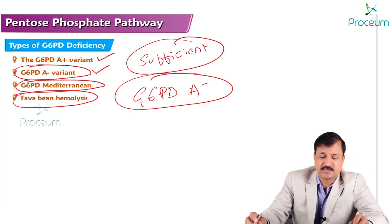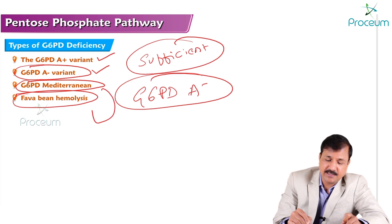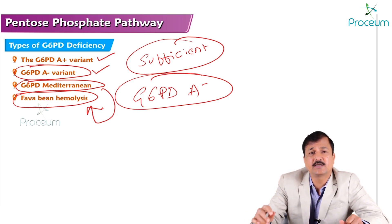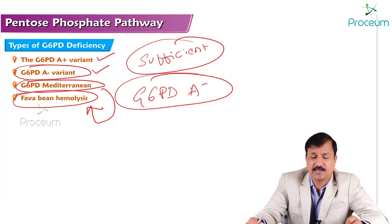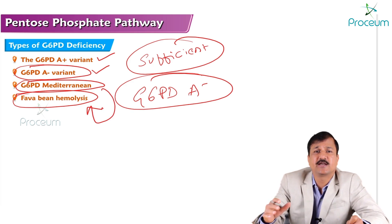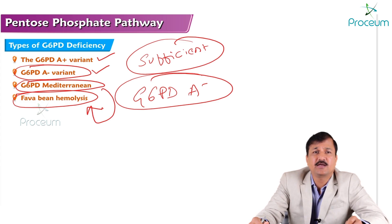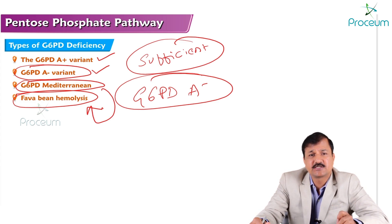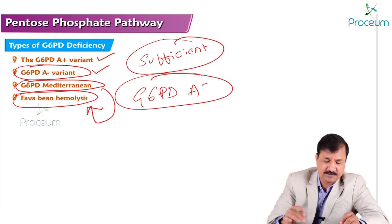Regarding fava bean hemolysis — favism — it is the G6PD A-minus Mediterranean variant that shows the highest sensitivity to consumption of fava beans, leading to severe hemolysis. Favism, seen specifically in G6PD A-minus Mediterranean patients, is simply fava bean hemolysis.